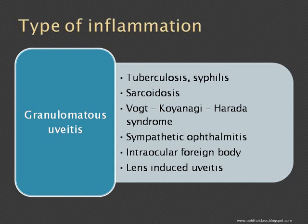Which diseases cause granulomatous uveitis? Infections are more commonly the cause: tuberculosis, syphilis, herpes simplex, and herpes zoster. Two other important conditions are Vogt-Koyanagi-Harada syndrome and sympathetic ophthalmia — both causing bilateral granulomatous uveitis. Sarcoidosis presents very similarly to tuberculosis. These are the common causes for granulomatous uveitis.